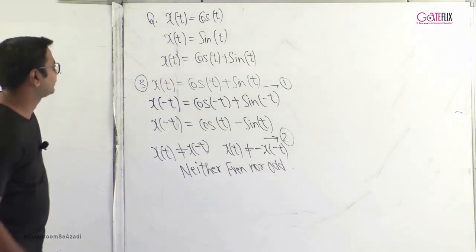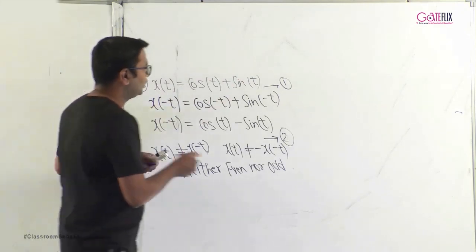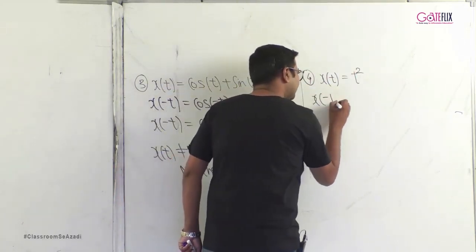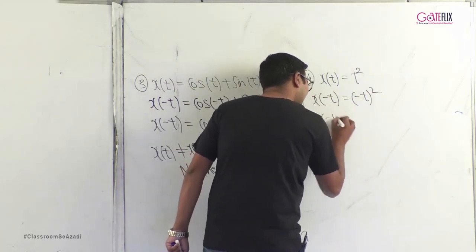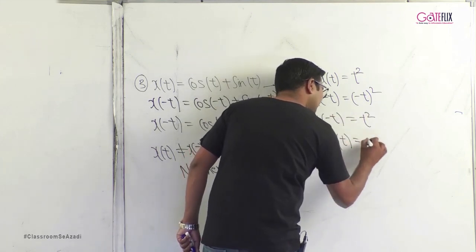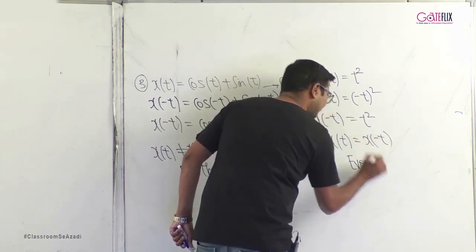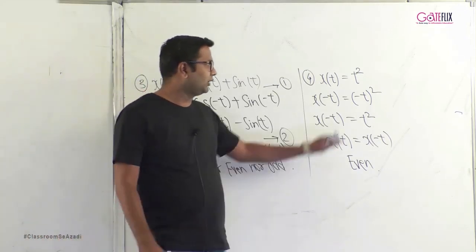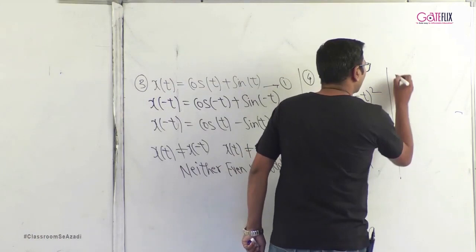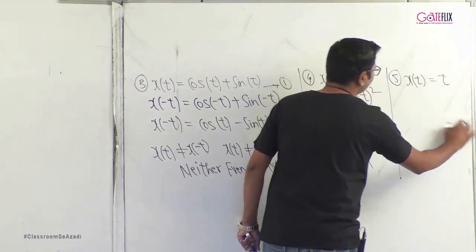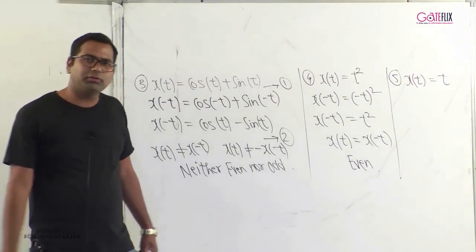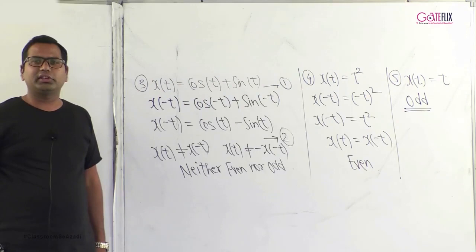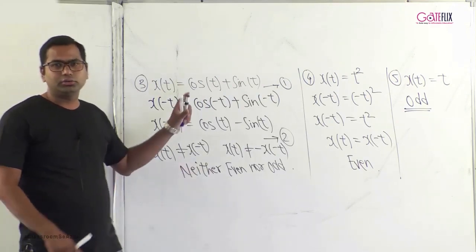Fourth example: x(t) = t². We find x(−t) = (−t)² = t². So x(t) = x(−t), making t² an even signal. A practice question: x(t) = t is an odd signal, as you can verify analytically.